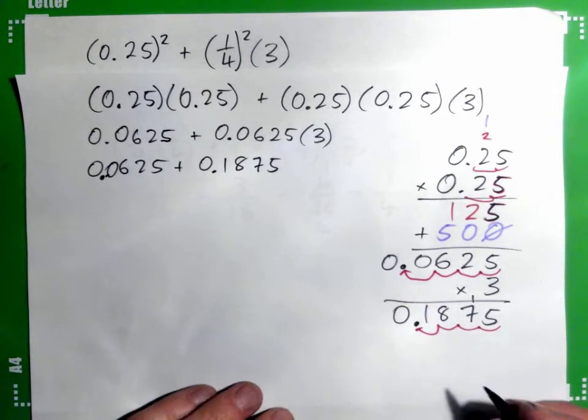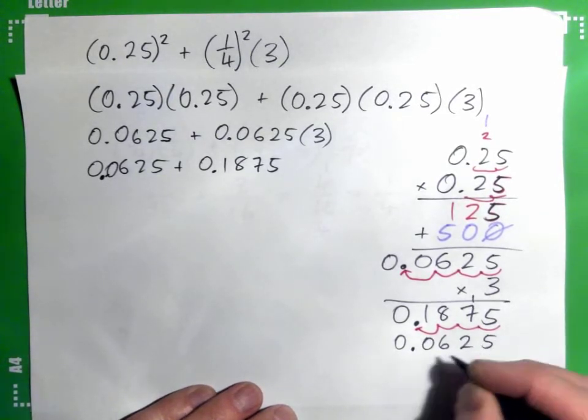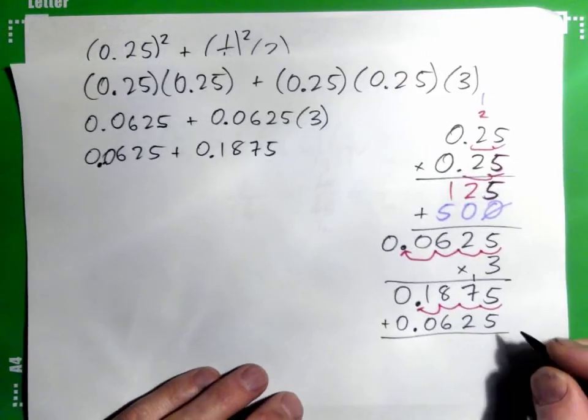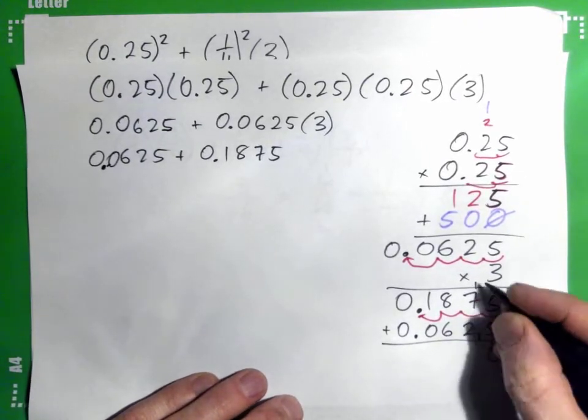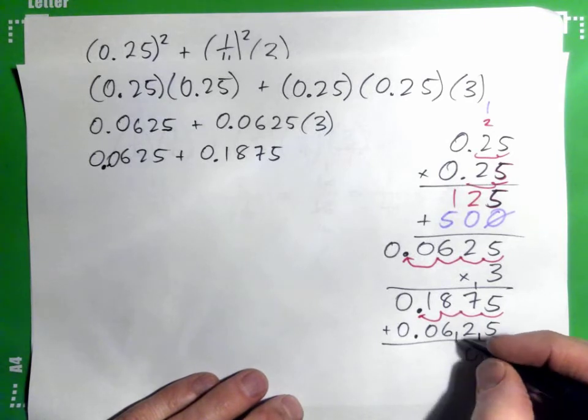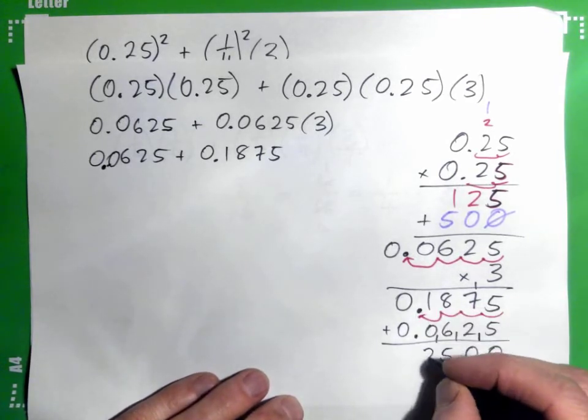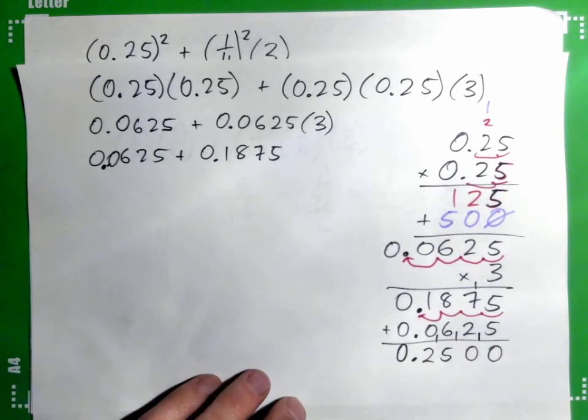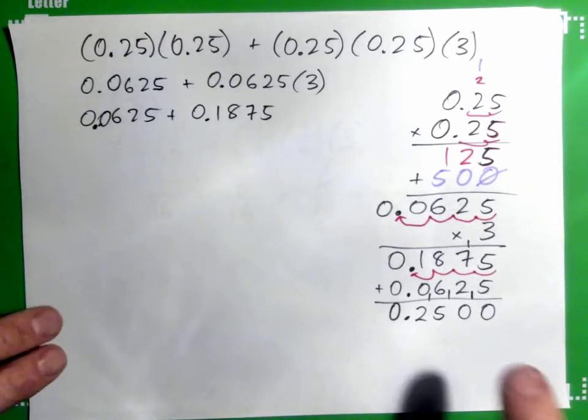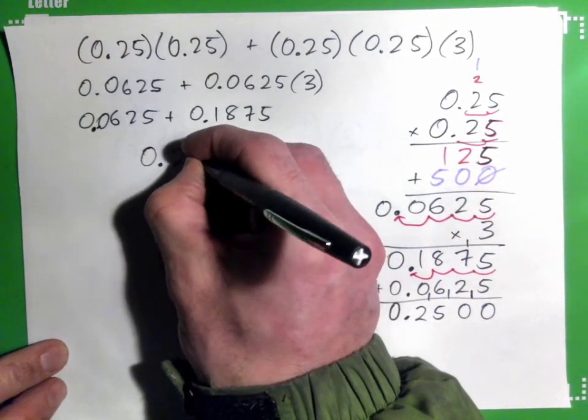Excuse me. So, 0.0625, add them. 5 and 5 is 10, carry 1. 2 and 1 is 10, carry 1. 7 and 8 is 15, carry 1. 1 and 1 is 2.0. Oh, look at that. What do we got? 0.2500, which is just 0.25, right?